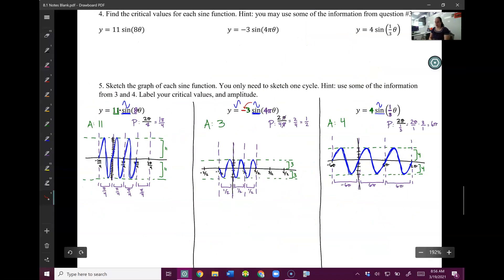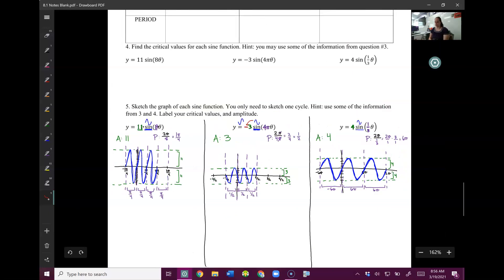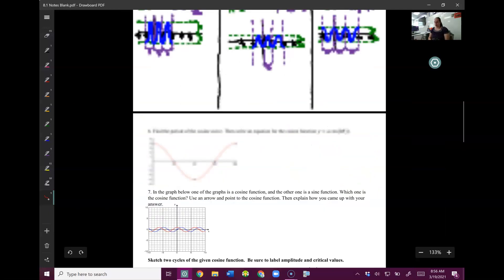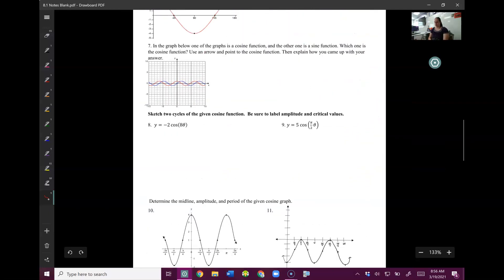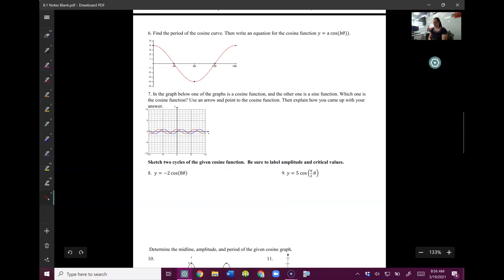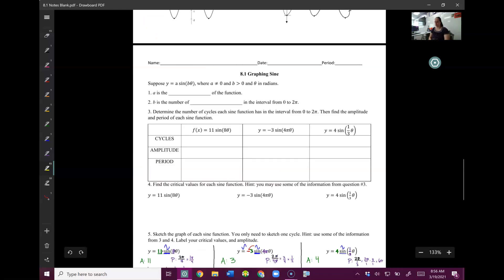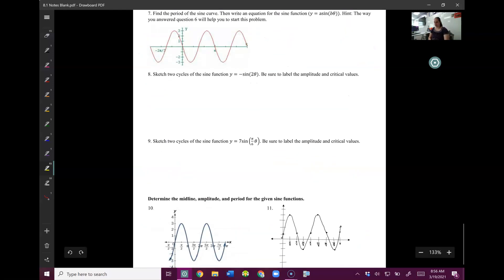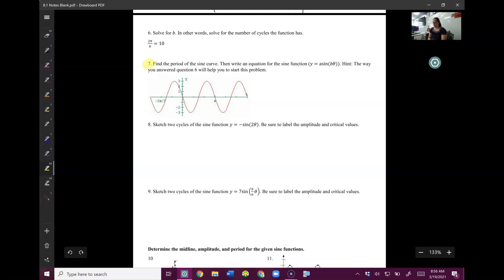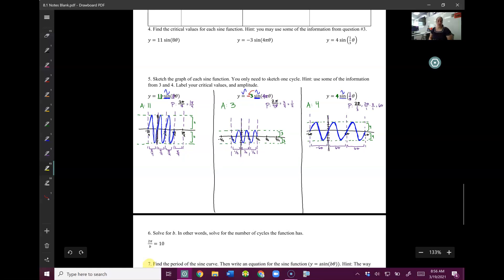And that is graphing our sine and cosine stuff. For your paper homework, if you come to this page right here, you'll have 6, 8, and 9 to do. And then if you go past the page we were just on, 7, 8, and 9. Okay. Ready, set, go.